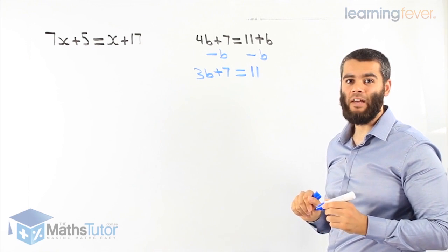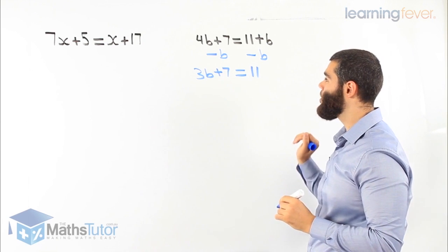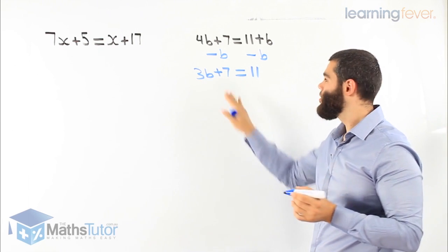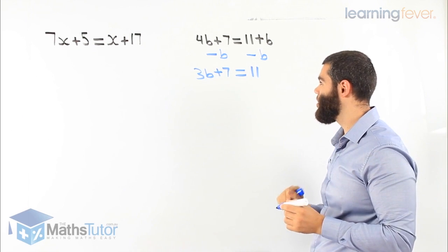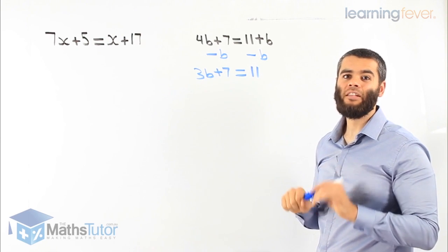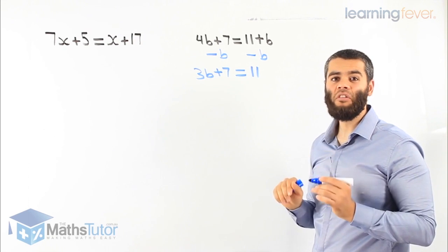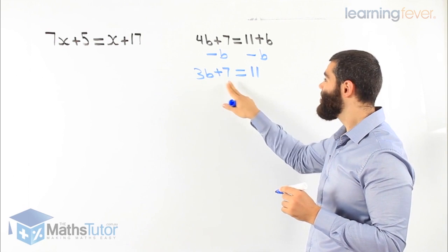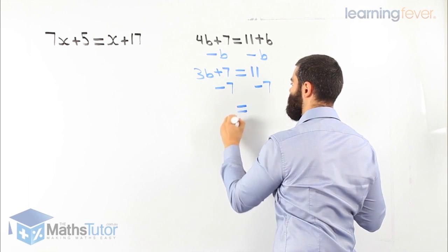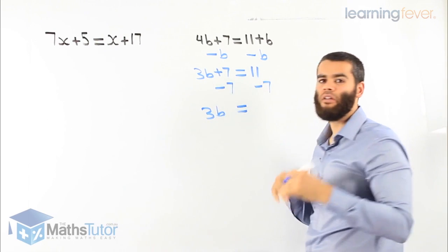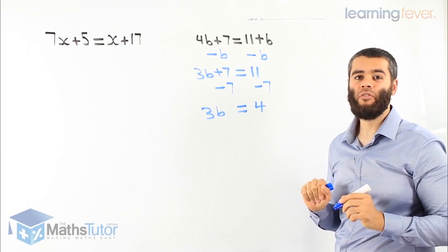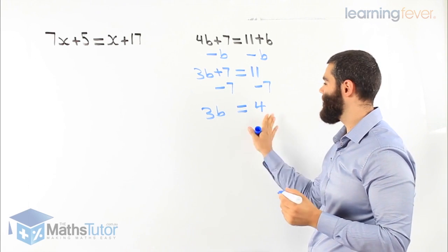3b plus 7 equals 11. With two-step equations, we need to get rid of the numerals so we can keep b by itself. Which one do we start with — the 7 or the 3? I like to remember it this way: which one is furthest from the pronumeral? The furthest one is 7, so we start with 7. 7 take away 7 is gone, and 11 take away 7 is 4. We have 3b equals 4 — now it's a one-step equation.